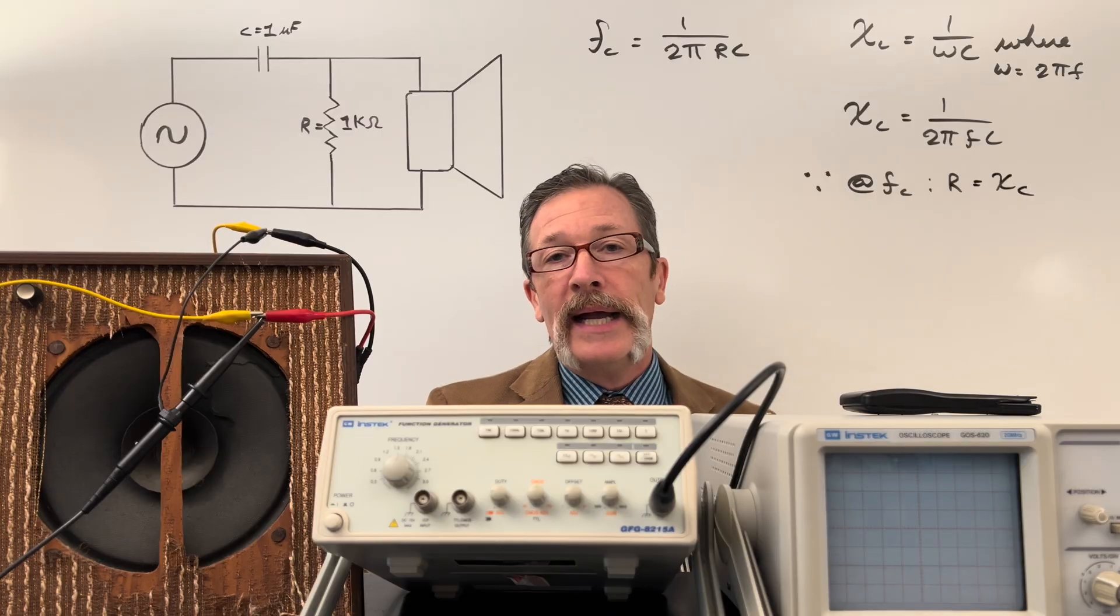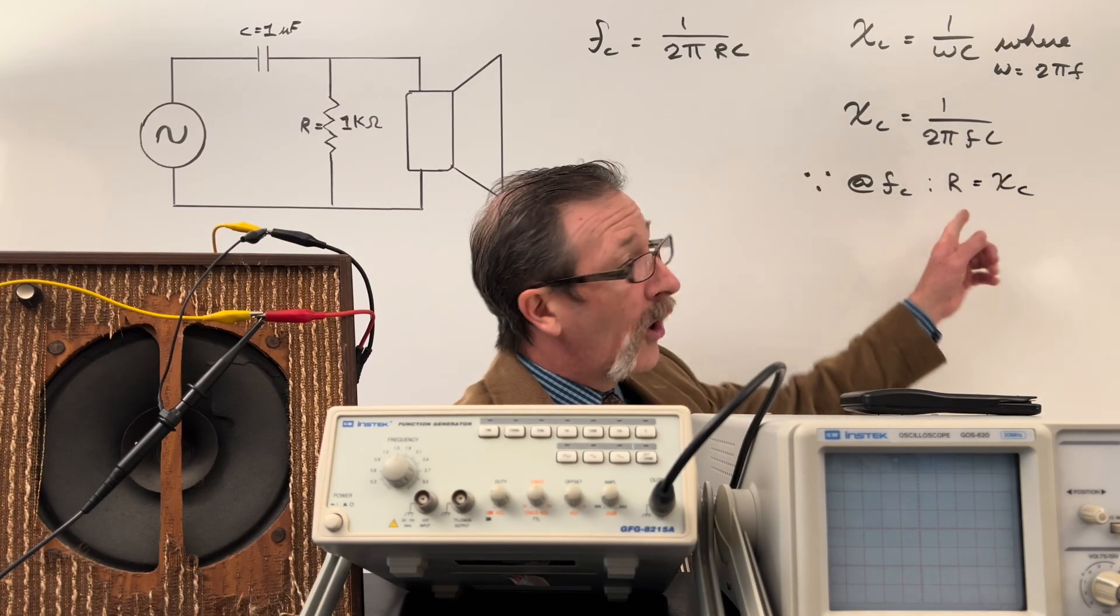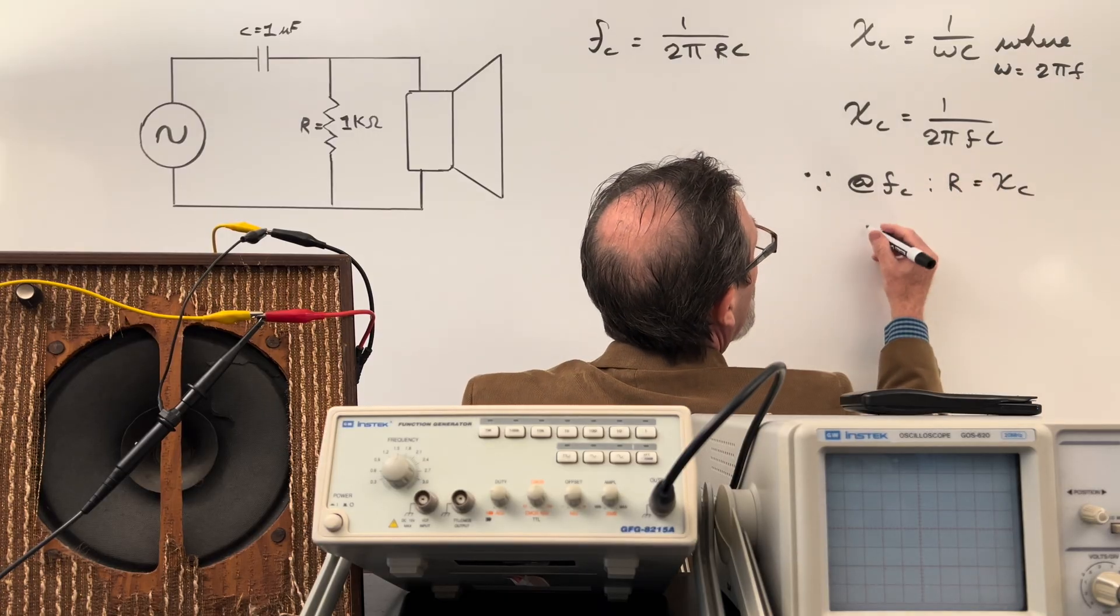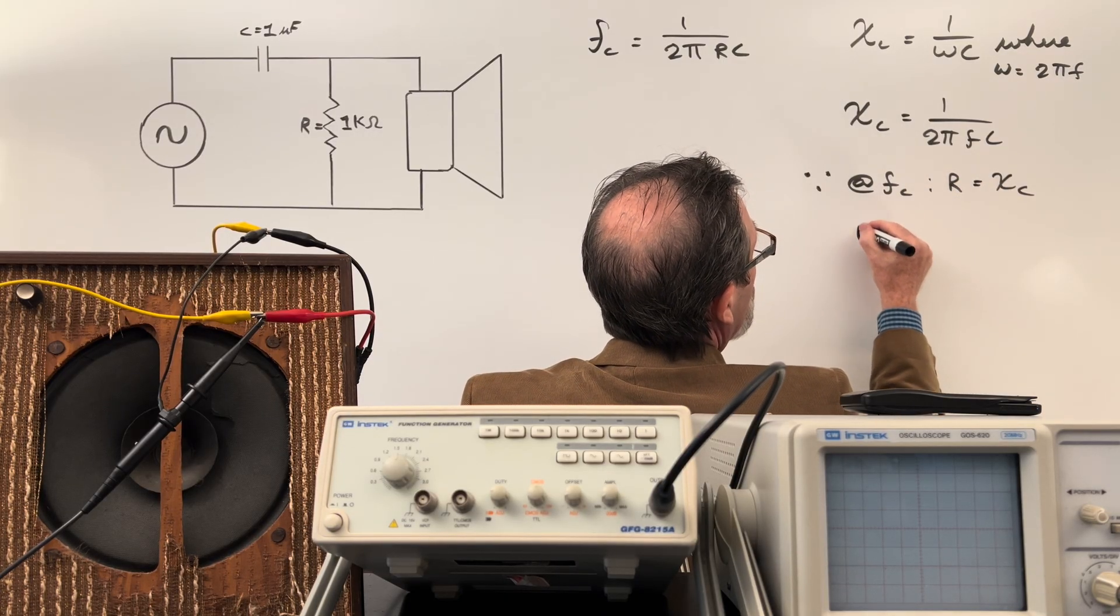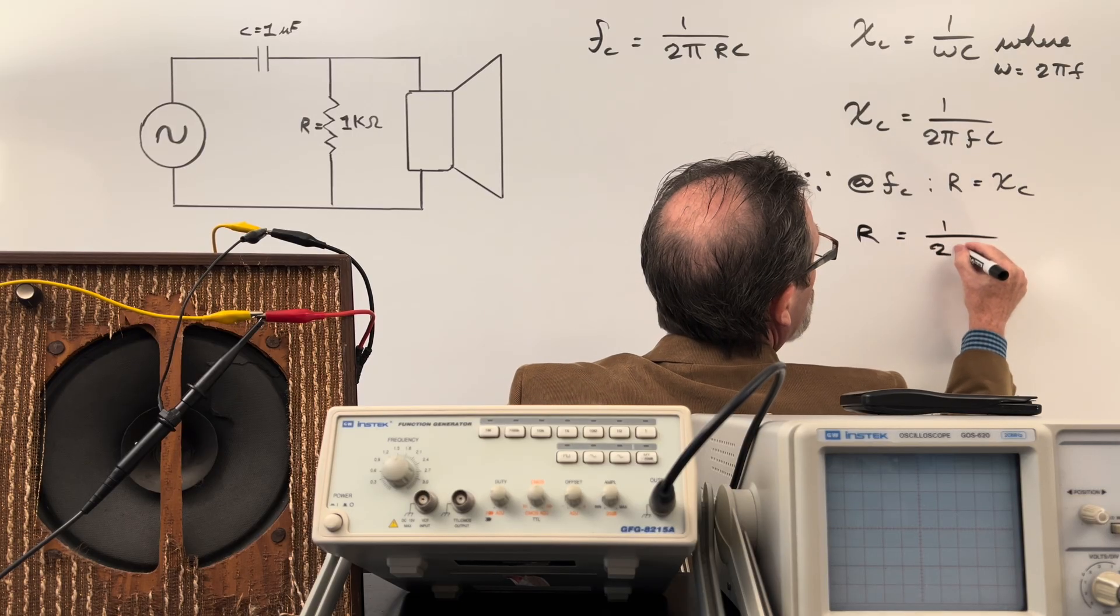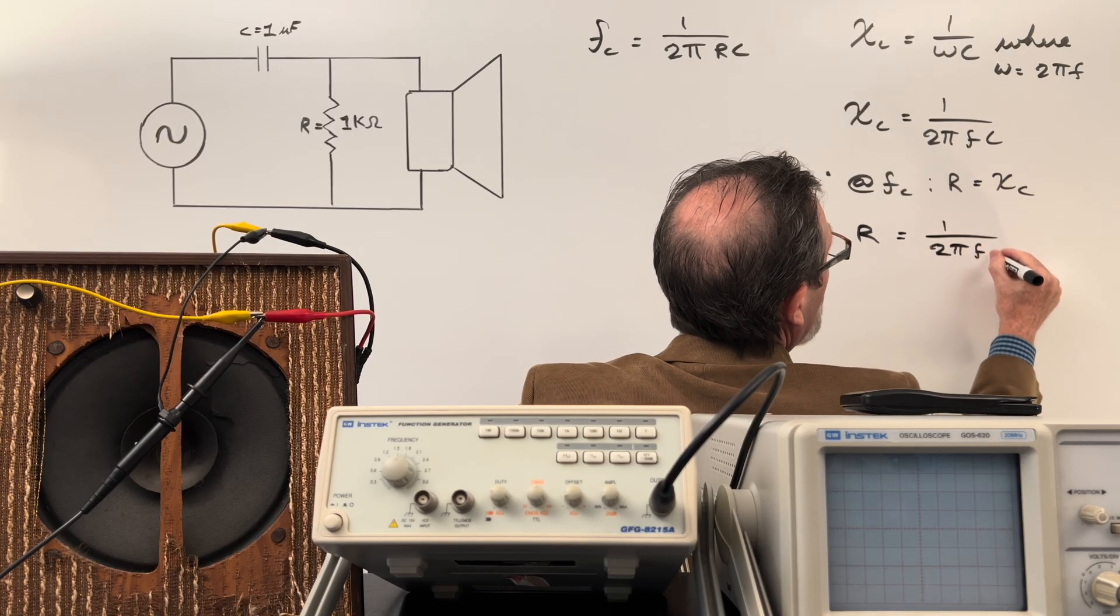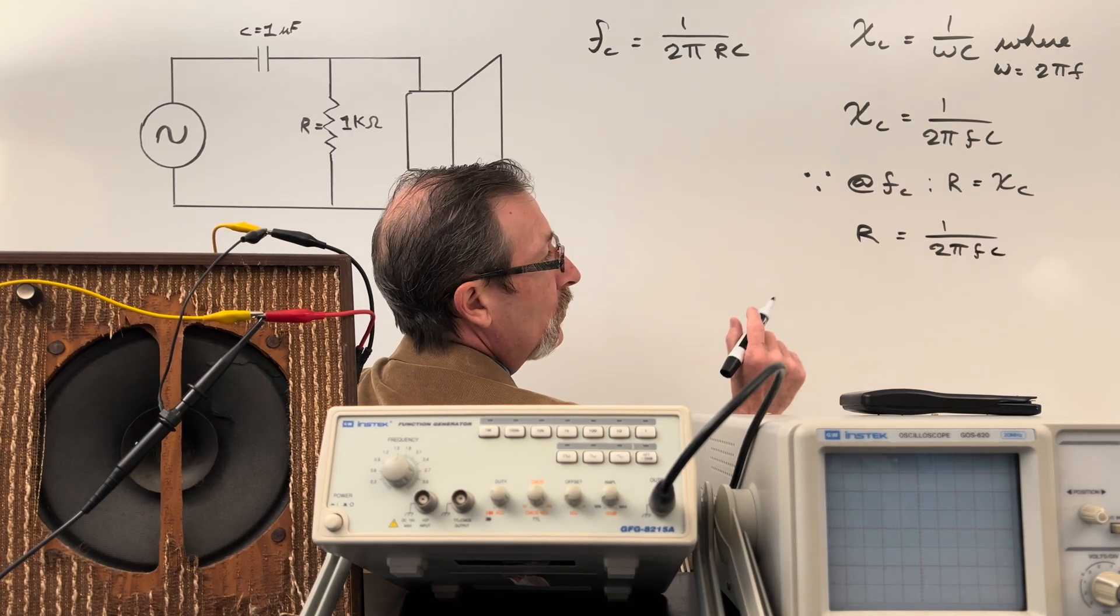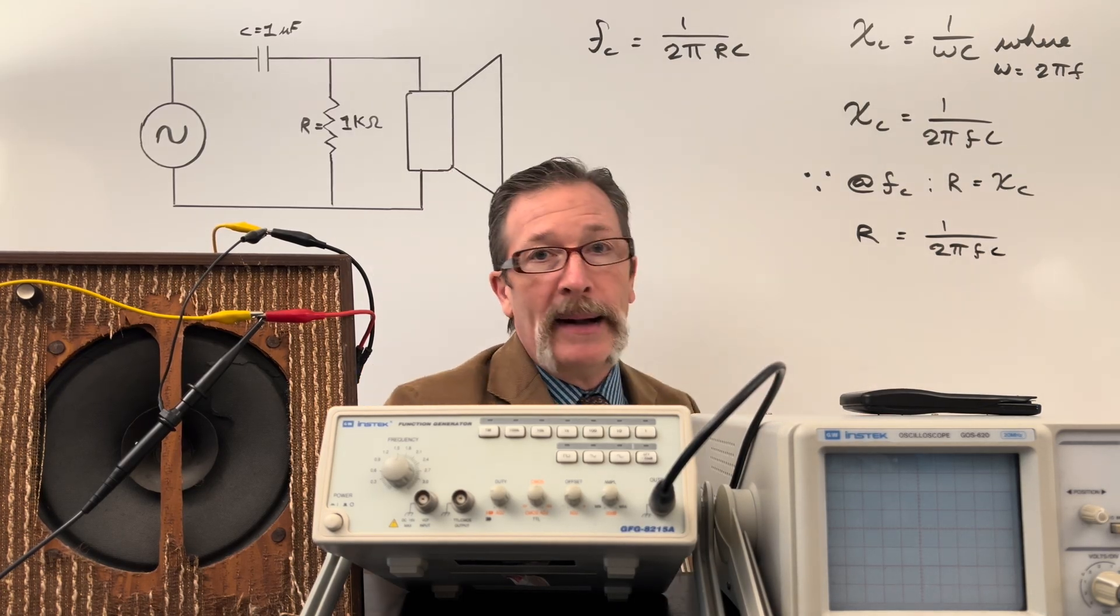In other words, our capacitive reactance is going to be our resistance at that point. Which means we can write this as: resistance equals 1 over 2πfC. And they can now start to make and back claims about that formula.